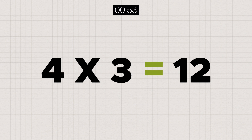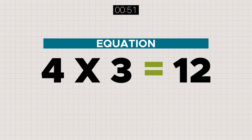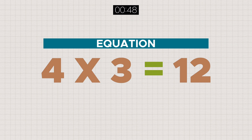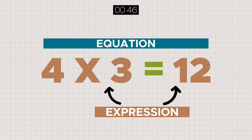When we have a line of math with two sides equated to one another, the whole of it is known as an equation. While each side is known as an expression.